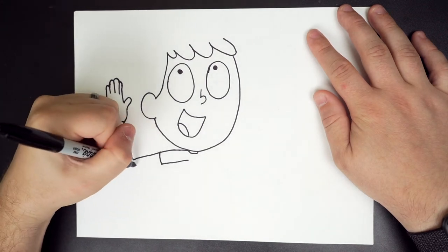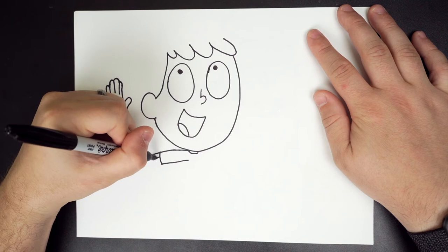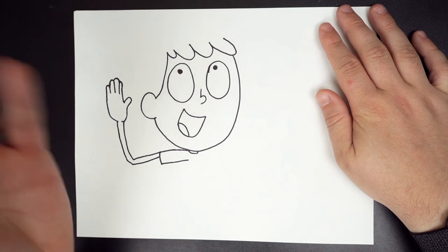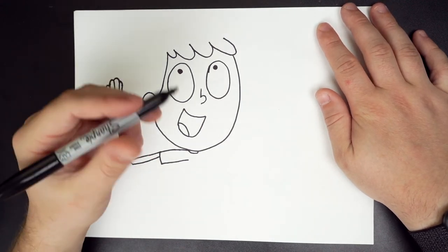Awesome. And then we're going to do a line from the sleeve to connect to her elbow. Awesome. Just like that. So she's kind of motioning like, hey guys, come this way.